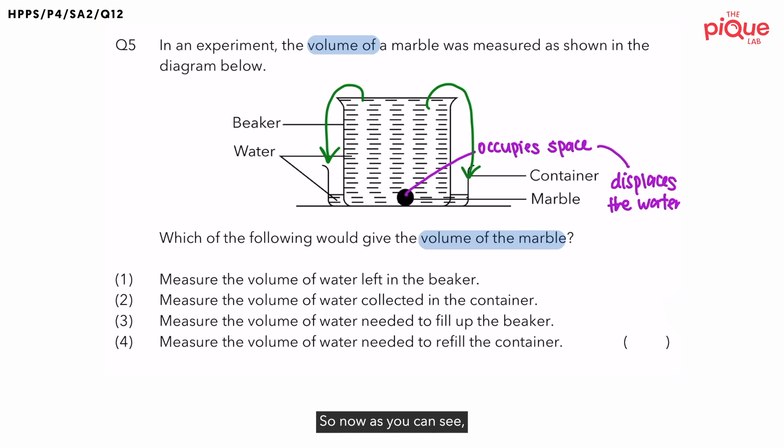So now as you can see, we have water collected in the container now. How is the volume of the water that is collected in the container related to the volume of the marble? The volume of water collected in the container represents the volume of the marble itself. So now how do you find the volume of the marble? You just need to measure the volume of the water that is collected in the container.